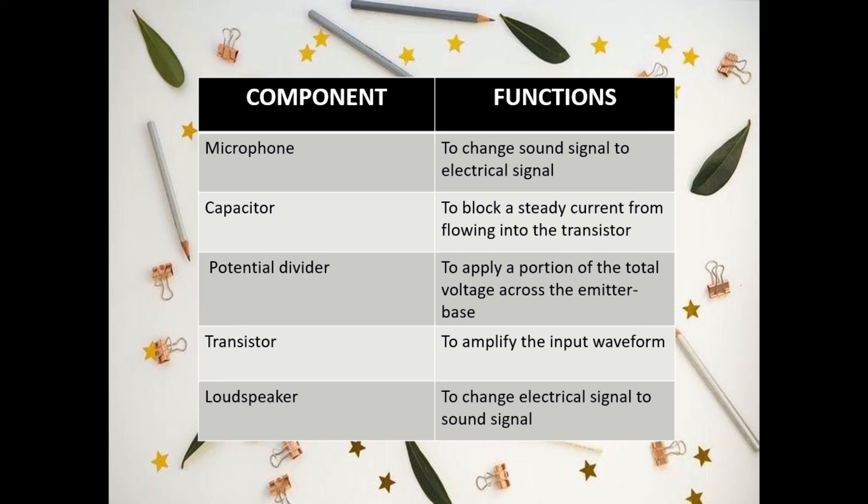The potential divider is to apply a portion of the total voltage across the emitter base. The transistor is to amplify the input waveform. Last but not least, the loudspeaker is to change the electrical signal to sound signal.